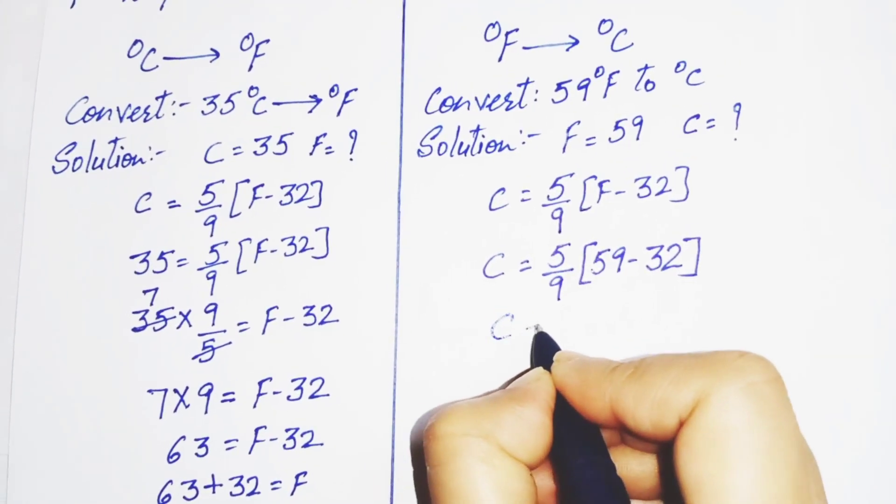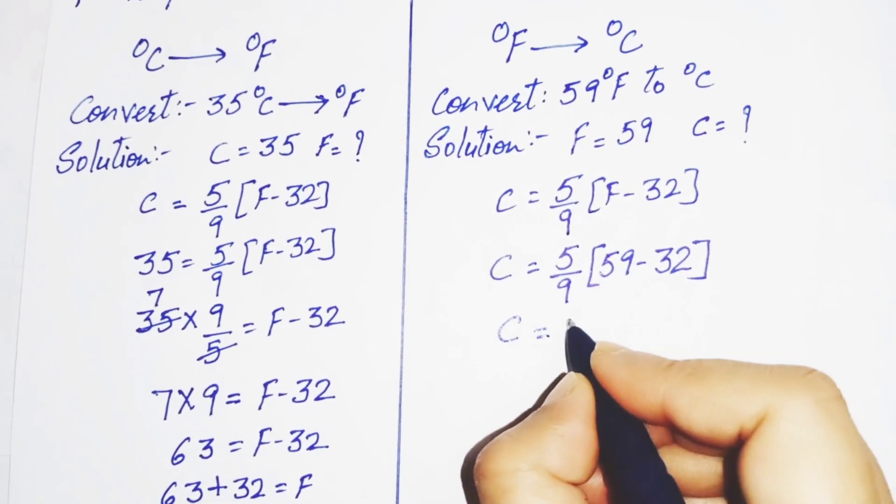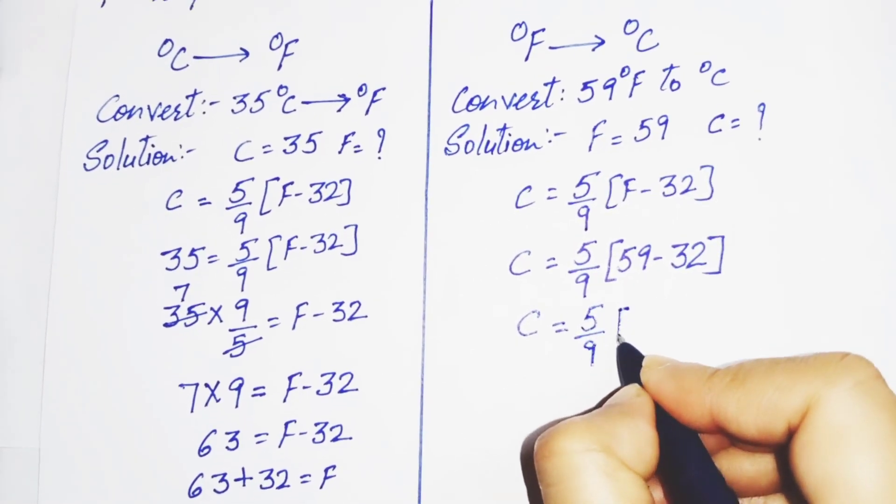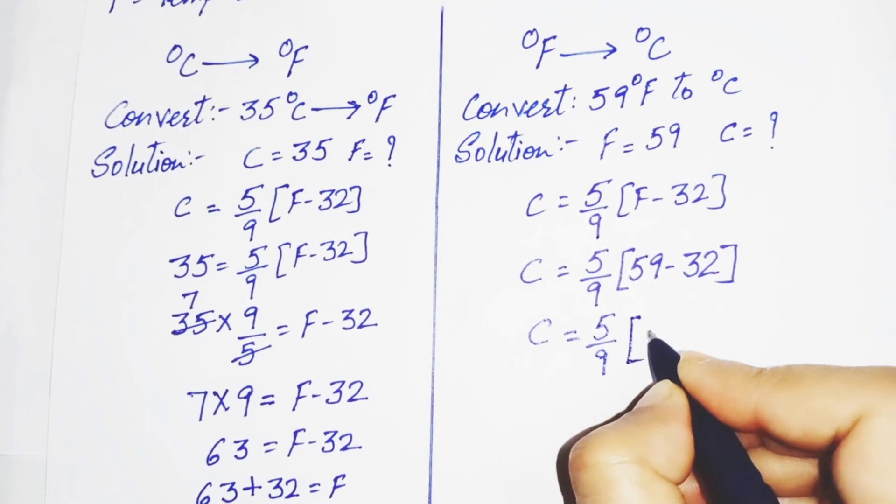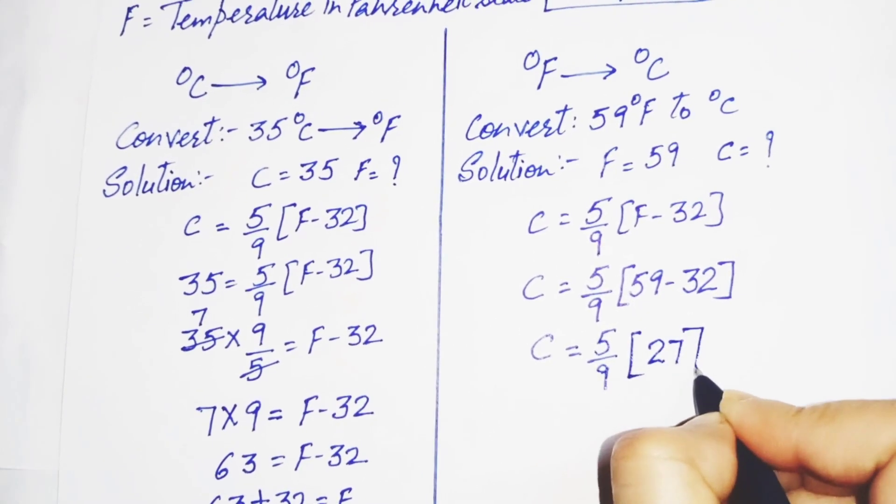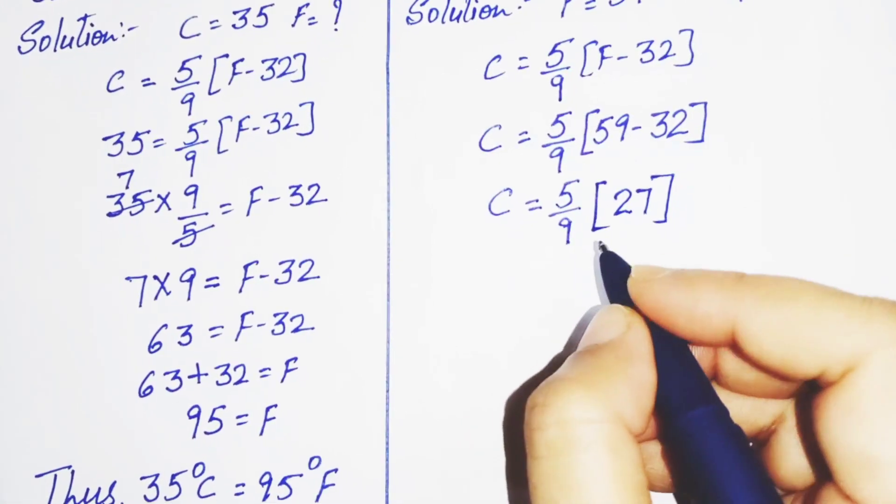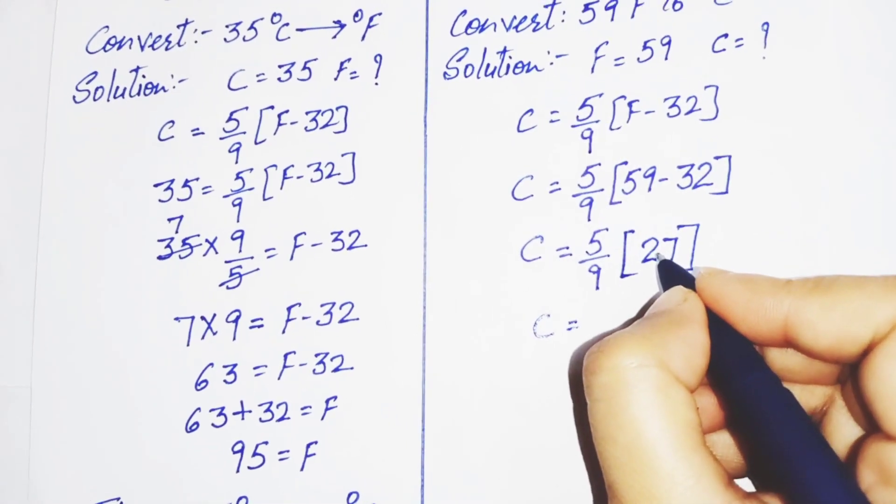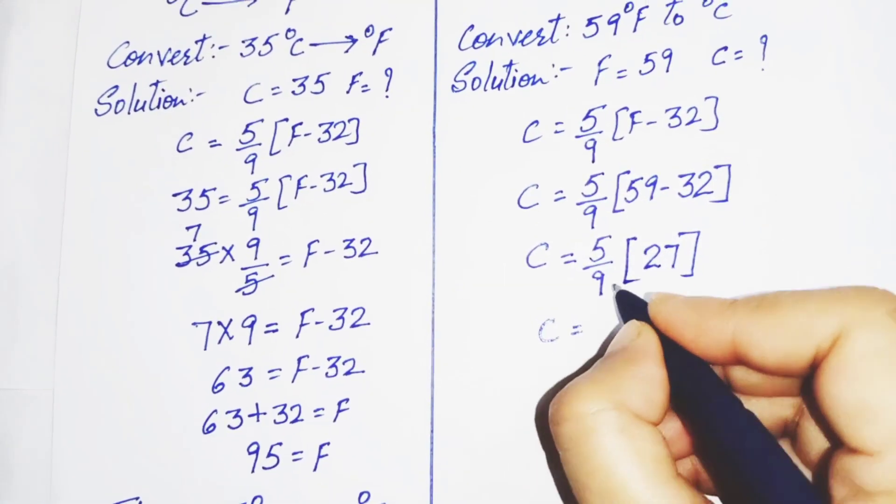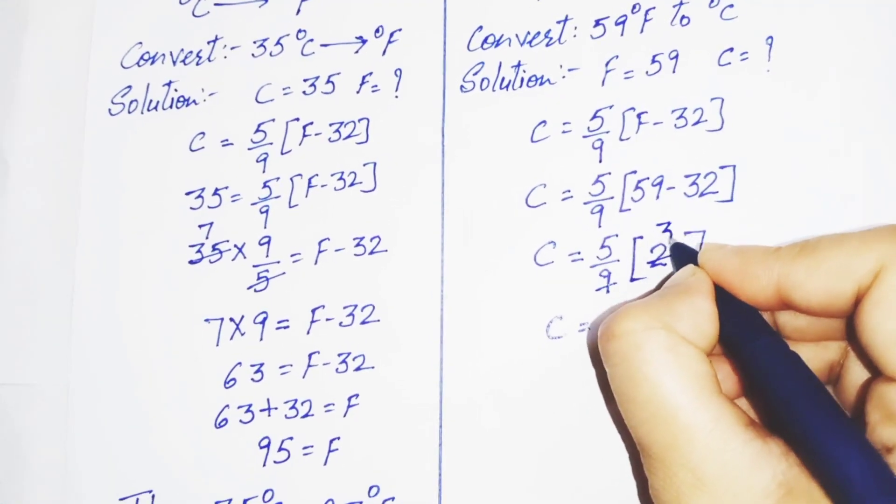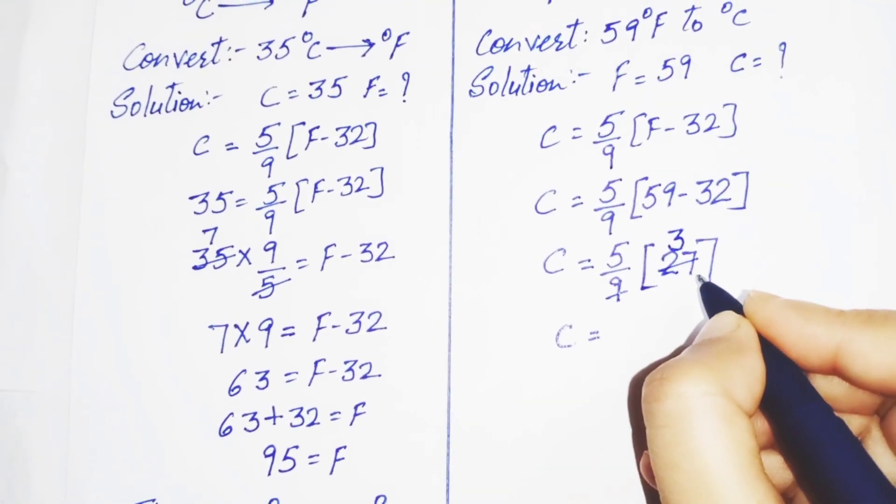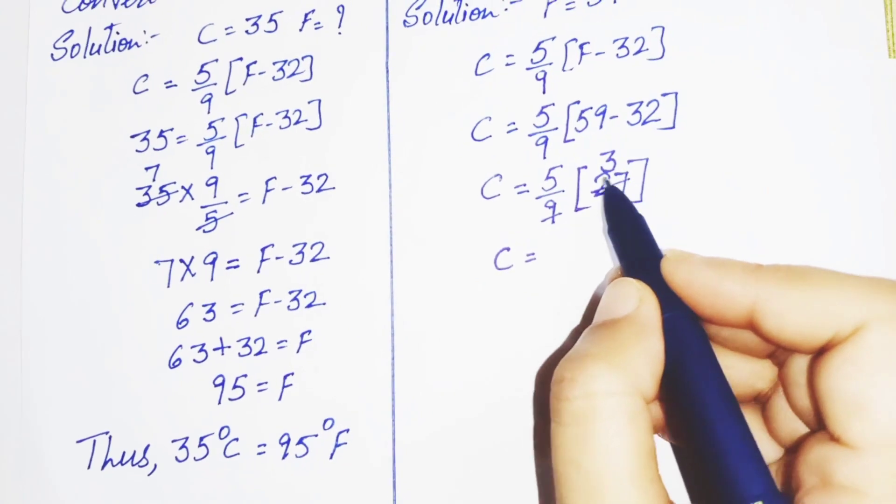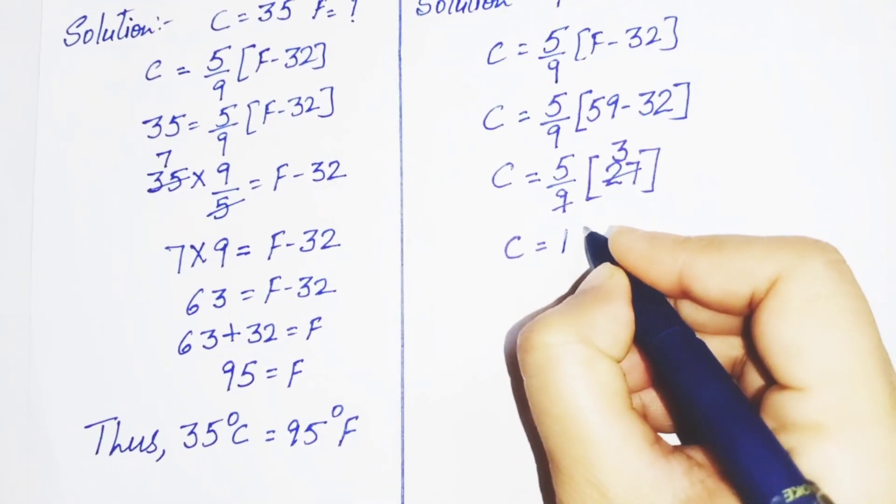Now subtract 32 from 59, we get 27. By dividing 27 by 9 we get 9 threes are 27. Now multiply 5 by 3 we get 15.